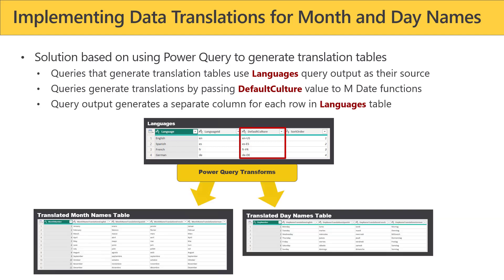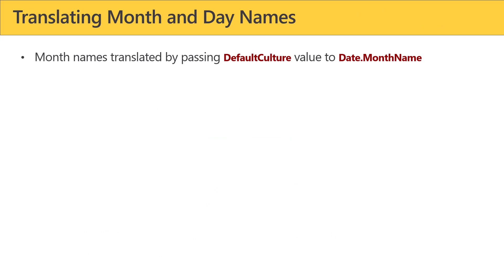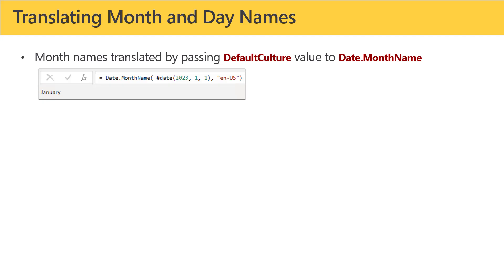The idea is that we can write transforms that go row by row through the languages table and use the default culture to figure out how to translate the month name or the day name given a particular language. Month names are translated by passing default culture to the Date.MonthName function, which is part of M.